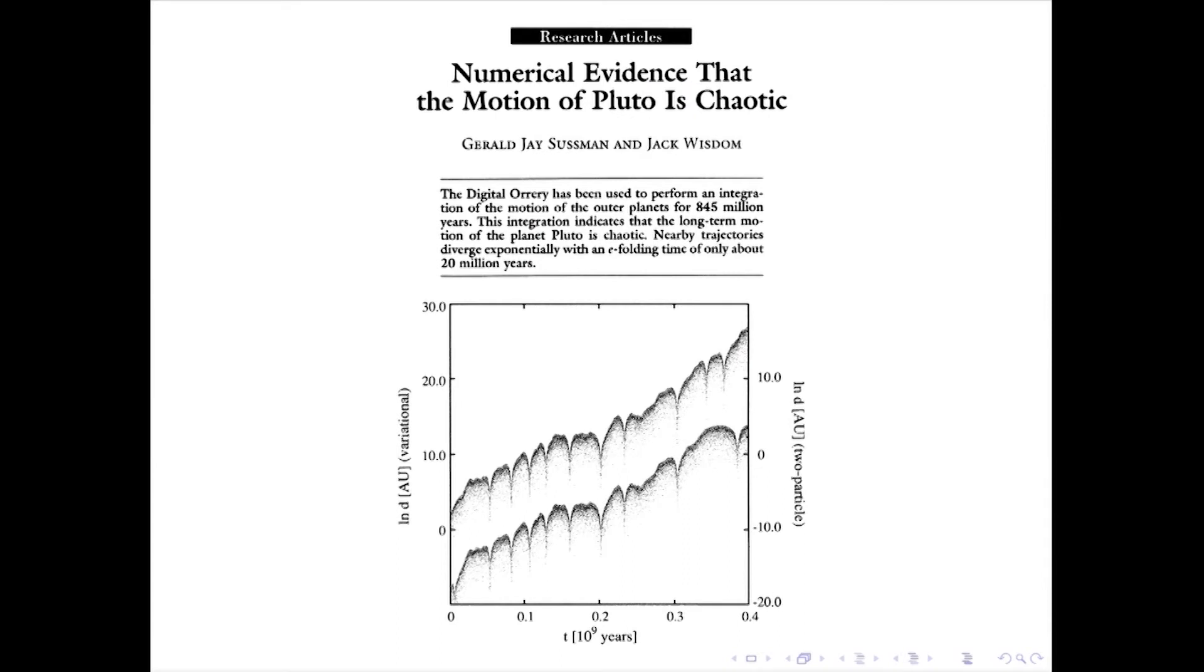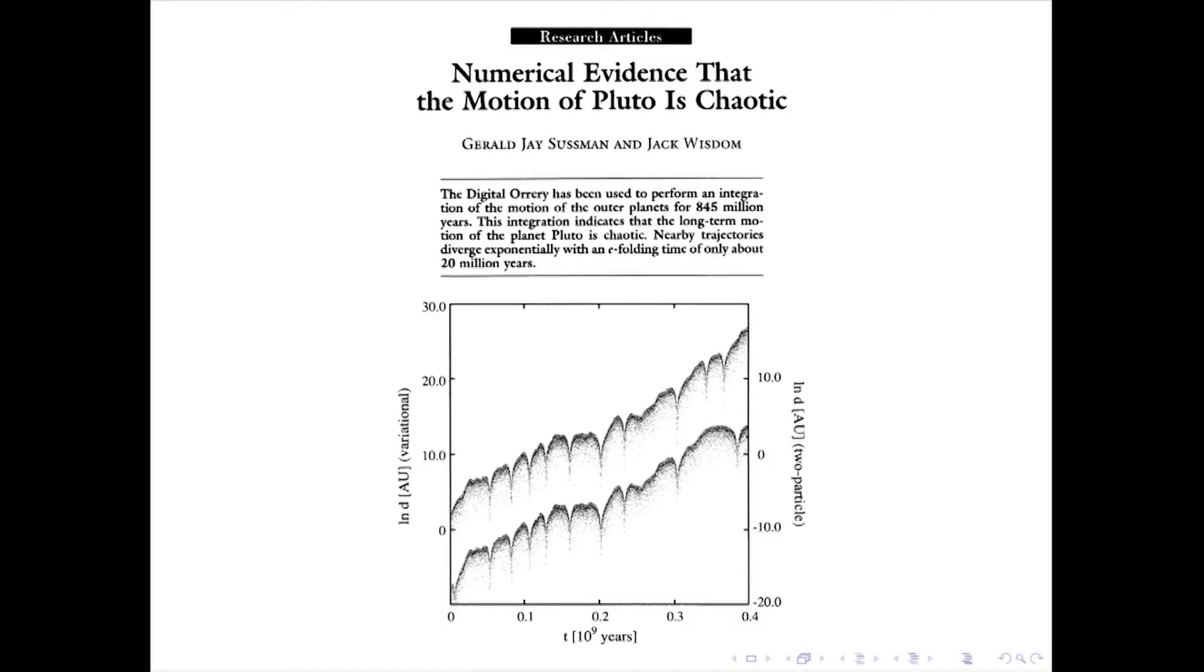So we focused on the motion of Pluto. Pluto was interesting because it's in resonance with Neptune. Pluto goes around the Sun twice for every three times Neptune goes around the Sun. So it's similar to the Kirkwood gap problem in that the asteroids went around three times for every one time Jupiter went around. So it's in resonance, and it also has a fairly high eccentricity. So it was a suspicious situation. And so we studied this with the digital orrery after I came here. And we found that indeed the motion of Pluto is chaotic. And this shows the log of the displacement between two Plutos versus time. And it's over 400 million years. And the distance initially is measured in millimeters, and it grows to astronomical units over this time span. The Lyapunov time is roughly 20 million years.